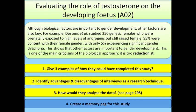Although biological factors are important to gender development, other factors are also key. For example, Dessens et al. studied 250 genetic females who were prenatally exposed to high levels of androgens but were still raised female. 95% were content with their female gender, with only 5% experiencing significant gender dysphoria. This shows that other factors are important to gender development, and is one main criticism of the biological approach: it is too reductionist.